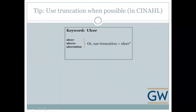One useful technique in CINAHL is truncation. To capture all forms of a word — like ulcer, ulcers, or ulceration — you can use a truncation symbol, in this case an asterisk, placed after the root of the word. Typing 'ulcer*' tells the database to find all different forms of that word automatically, saving you from typing each form individually.